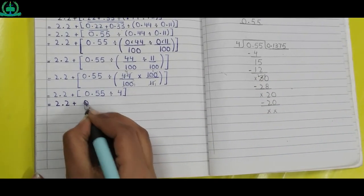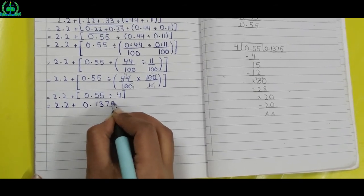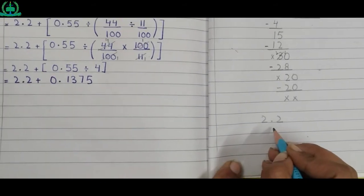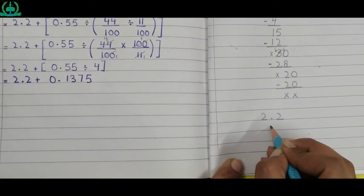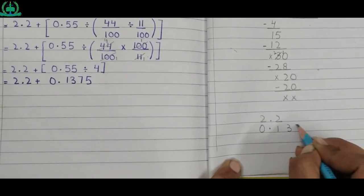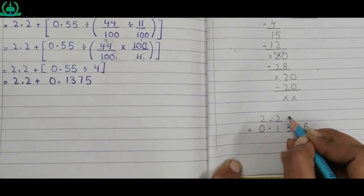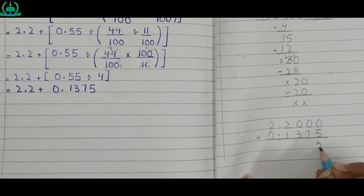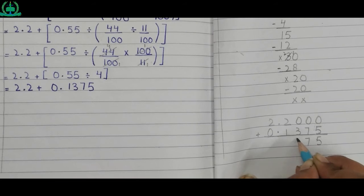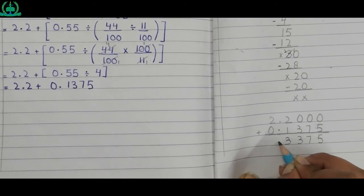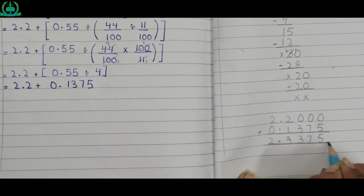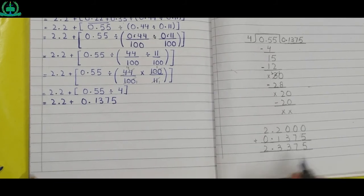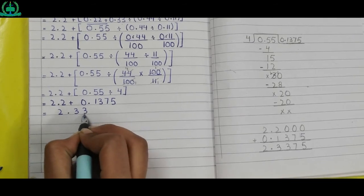2.2 plus 0.1375 — rough work: when we do addition we make sure that we write decimal under the decimal. 0.1375 — we put zero to balance the result. Zero plus five five, zero plus seven seven, zero plus three three, two plus one three. Decimal under the decimal, two plus zero two. 2.2 plus 0.1375 makes 2.3375, so we write 2.3375.